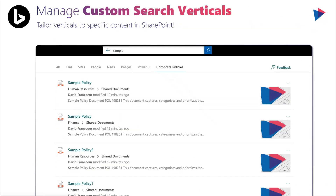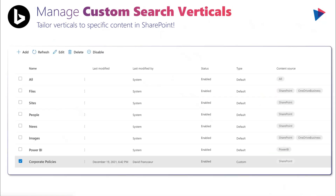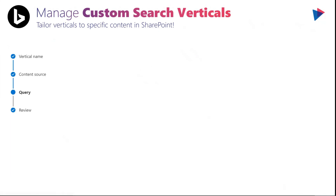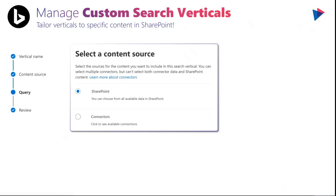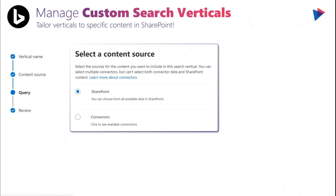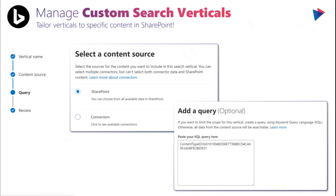Microsoft continues to improve support for custom verticals in Microsoft Search. You've had the ability to customize out-of-the-box verticals, and recently for both out-of-the-box and custom ones you can add, edit, delete, and disable these. You can add SharePoint as a content source or choose from dozens of search connectors including Amazon, SQL, Jira, Azure DevOps, Box, Documentum, FileShares, Jive, Oracle, Salesforce, and ServiceNow. You can choose to have all content searchable or limit the scope of a vertical using KQL.